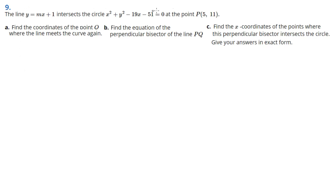Number nine. We've got y equals mx plus 1 intersecting with a circle x squared plus y squared minus 19x minus 51.